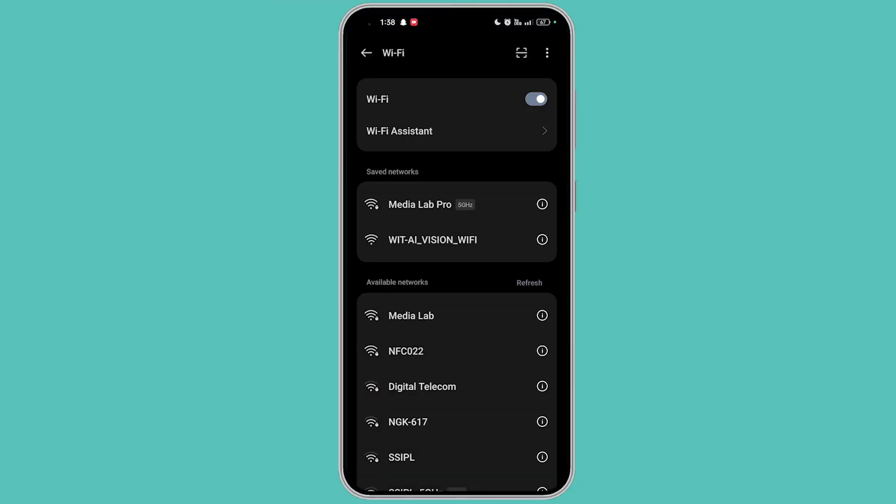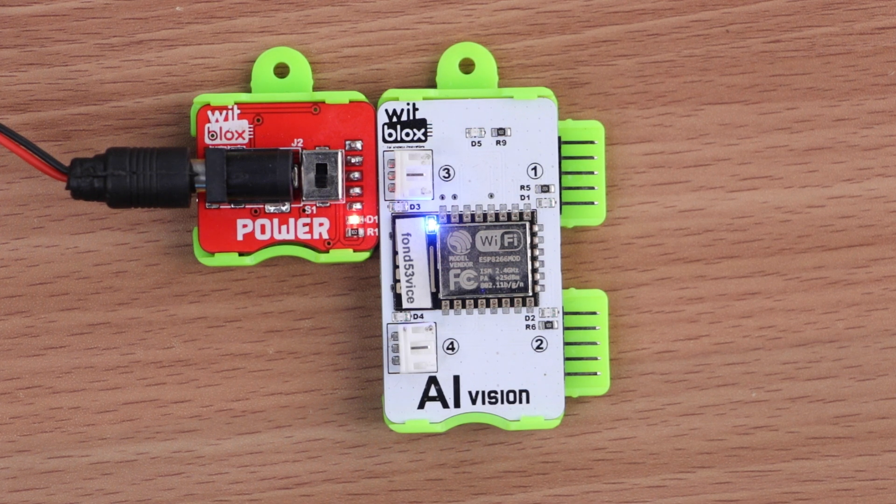If the password is entered correctly, it will be indicated with a red slash green light on the AI blocks.